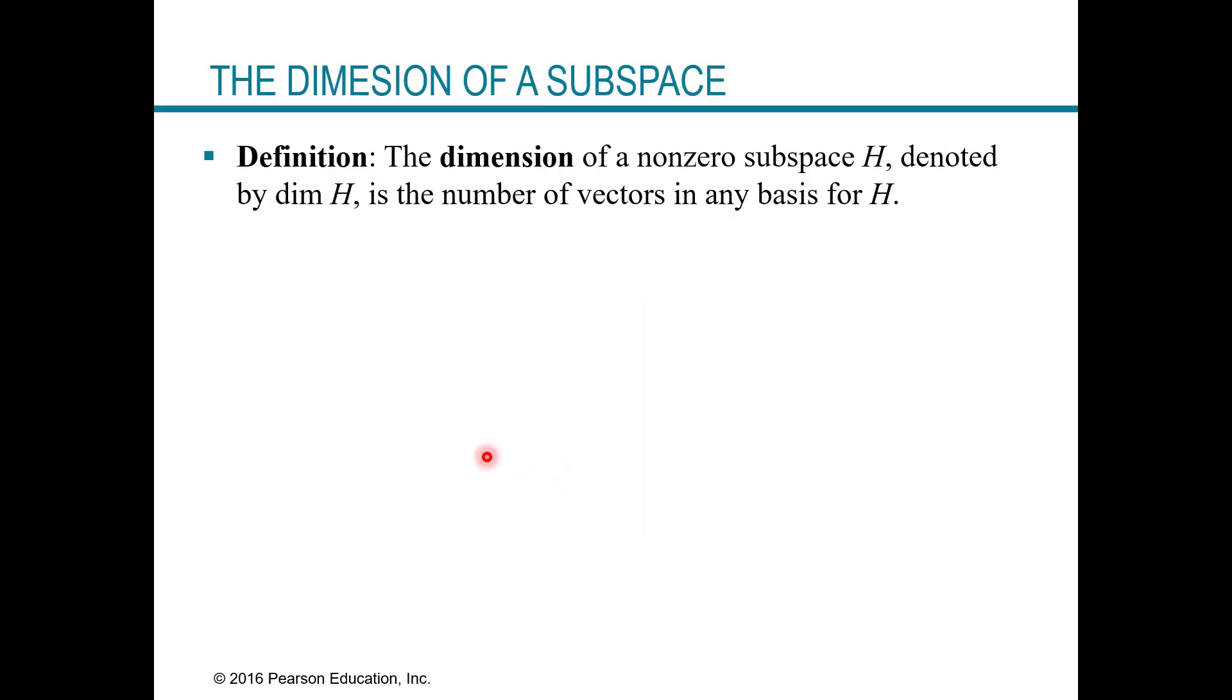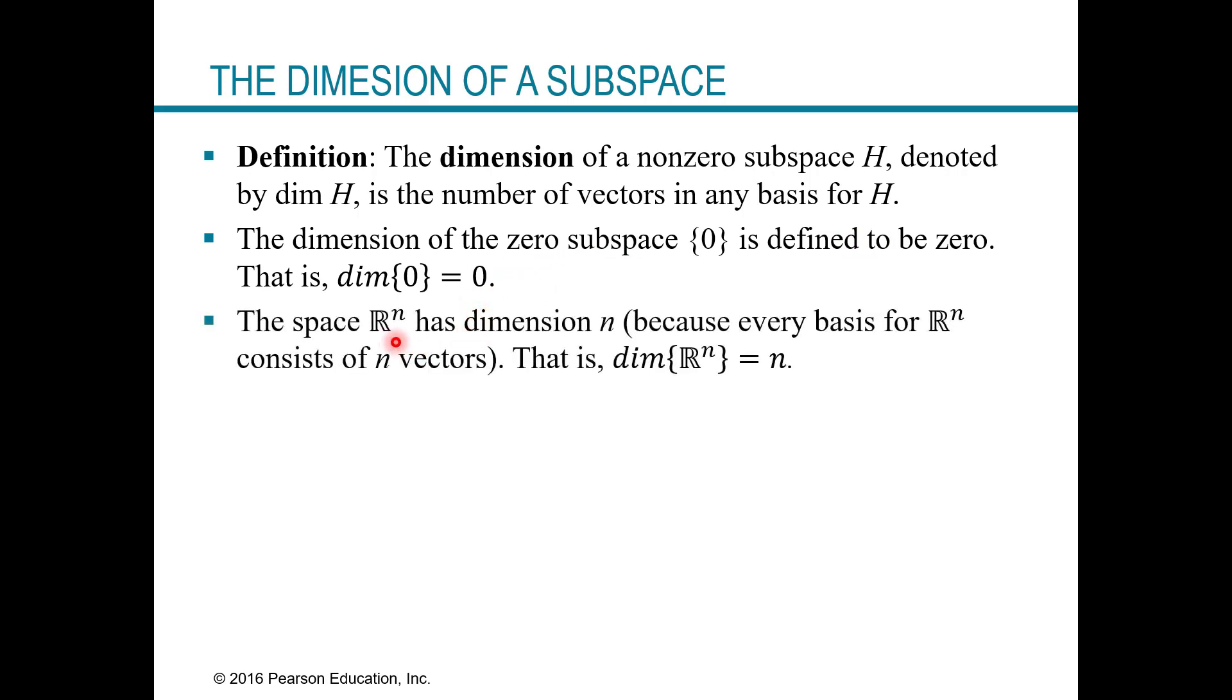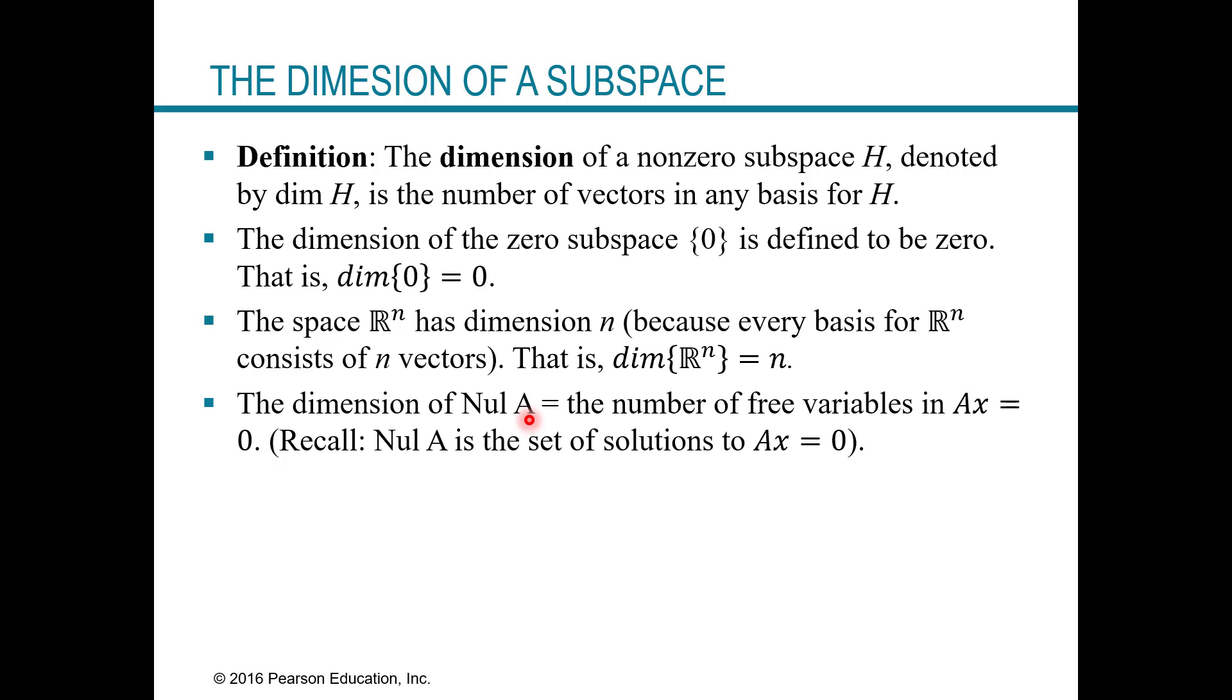Alright, now we're ready to talk about the dimension of a subspace. So the definition is that the dimension of a non-zero subspace H, denoted dim of H, is just the number of vectors in any basis for H. And so some facts for us. The dimension of the zero subspace is defined to be zero. The space Rn has n dimensions, and this is because every basis for Rn has n vectors in it.